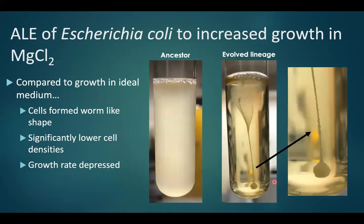From a macro perspective, looking at cells phenotypically, the ancestral strain formed a classic dense E. coli culture in LB, whereas the evolved strains formed a biofilm — a large macro structure that was actually tying itself in knots, with all cells really aggregating and clumping together. I also noticed a corresponding decrease in cell density and a depressed growth rate.